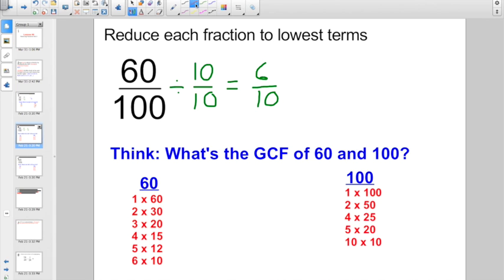Not if they are both even numbers, right? If they're a pair of even numbers, I'm going to have to divide again, this time by 2. So 6 divided by 2, that is 3. 10 divided by 2, that's 5. 3/5 is 60 hundredths in its lowest terms.